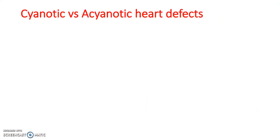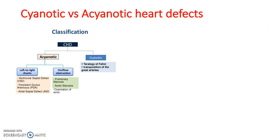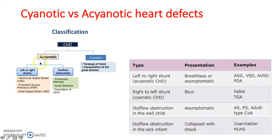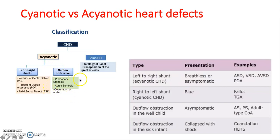Cyanotic versus acyanotic heart defects. A cyanotic heart defect is caused by tetralogy of Fallot — this is normally a right-to-left shunt. Transposition of the great arteries will also cause this. An acyanotic heart defect involves left-to-right shunts, such as a VSD, a PDA, or an ASD. It can also be caused by an outflow obstruction — so pulmonary stenosis, aortic stenosis, or coarctation of the aorta. This is not due to deoxygenated blood going around the body, but rather not enough oxygenated blood going around the body.